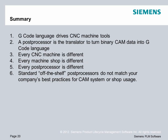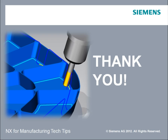So to summarize: the G-code language is what drives the CNC machine tools, and a post-processor is the translator that turns that binary CAM data into the G-code language. Every CNC machine is different, every machine shop is different, therefore every post-processor must be different. And typically speaking, an off-the-shelf post-processor is not going to match your company's best practices for CAM system or shop usage. That's it for this lesson. In the next lesson, we'll actually open up PostBuilder and step you through the basic steps of creating a post and testing it using NX CAM or CAM Express. Thanks for viewing.